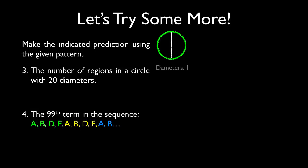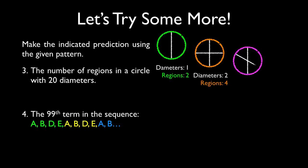And notice that with 1 diameter, I get 2 regions. Here's another circle. This time I'll draw in 2 diameters. And look, there are now 4 regions with 2 diameters. If I draw in 3 diameters, are you seeing a pattern yet? And with 3 diameters, there are 6 total regions. Can you make a prediction with 4? Lo and behold, we get 8 regions.